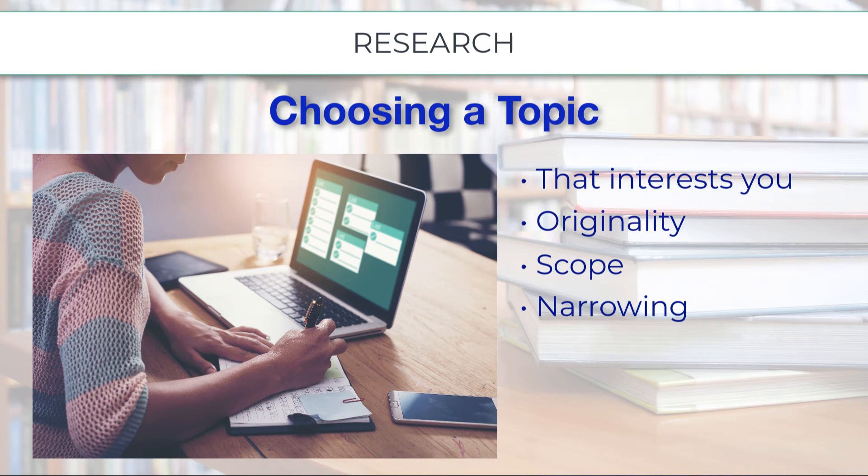Let's say your professor has asked you to write a five-page paper about Middlesex County College. In order to do this topic justice, you will need to narrow your focus to something more specific. You may want to focus on the services of the Student Life Center, a specific course, major, or professor, services offered by Career Services, or the Library and Learning Center.